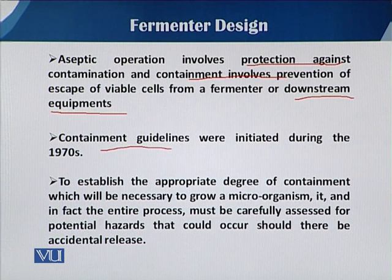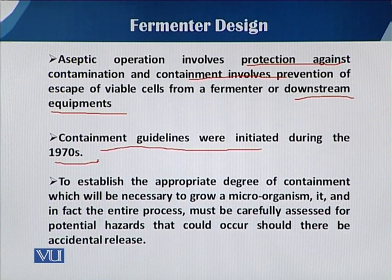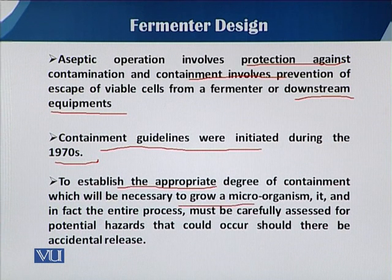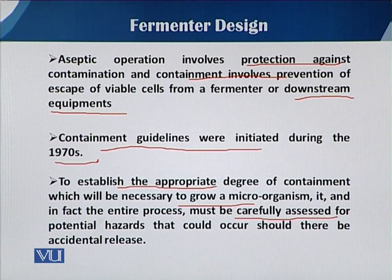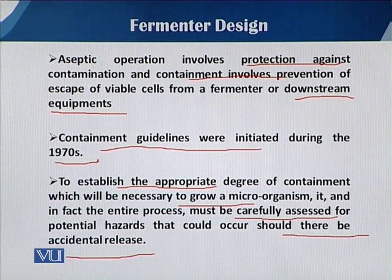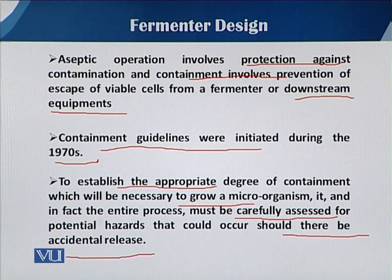The containment guidelines were first initiated during the 1970s in order to establish the appropriate degree of containment necessary to grow a microorganism. The entire process must be carefully assessed for potential hazards that could occur should there be an accidental release. When a fermentation process is ongoing, the microorganism being used for mass culturing can be a pathogen, and there are many mishaps that can occur during fermentation. In such cases, we have to assign hazardous levels.